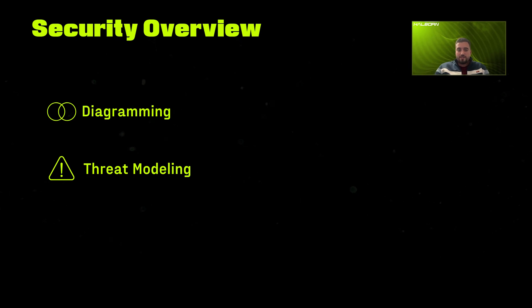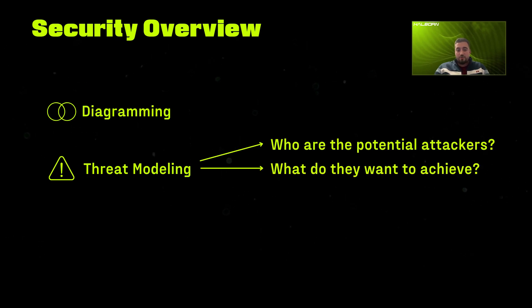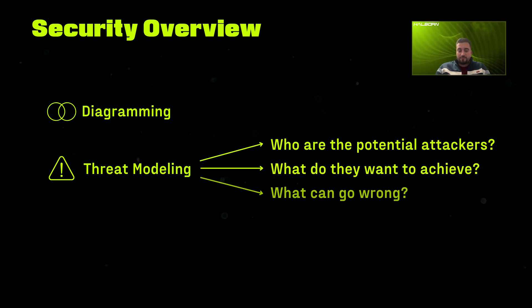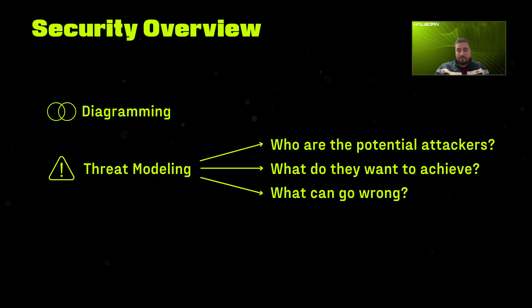Secondly, there is a powerful approach called threat modeling, which comes down to answering three questions: Who are the potential adversaries? What do they want to achieve? And what can go wrong in a particular place of the protocol? It's mostly powerful because it allows us to identify potential threats very early in the development lifecycle and decide whether it is something that we are really afraid of.